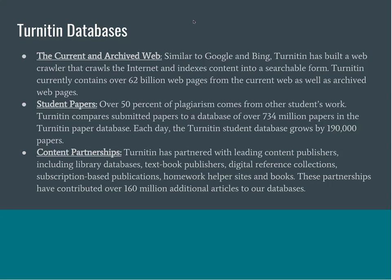The last type of database searched is what they label content partnerships, which consists of periodicals, journals, and other digital publications — akin to searching the text of all the library journals and their databases. There are over 160 million articles in these databases for TurnItIn. That's a general overview of what your student's work is being compared to when they submit through TurnItIn.